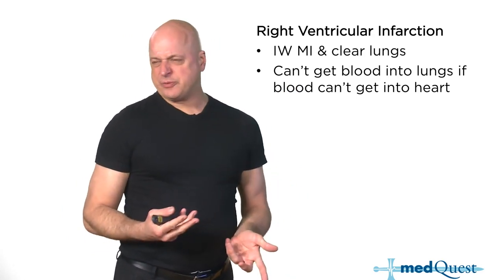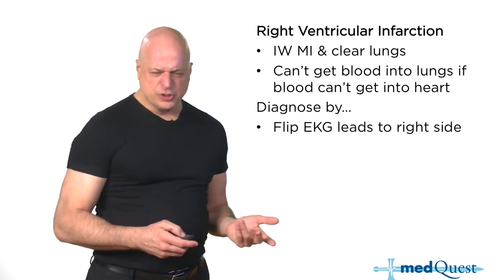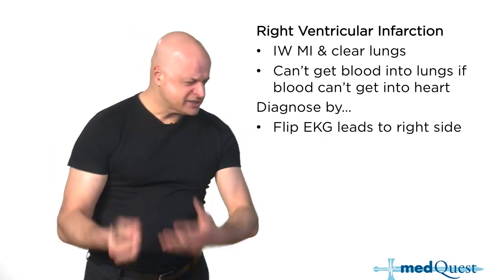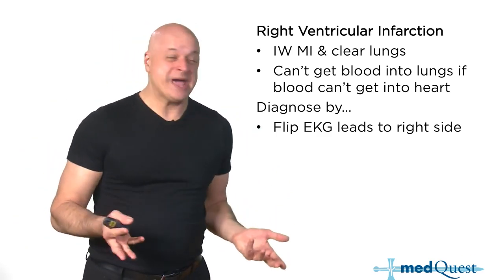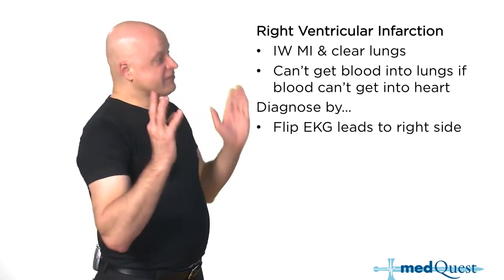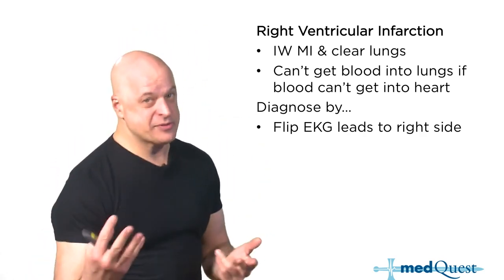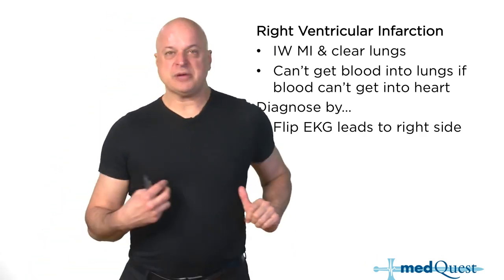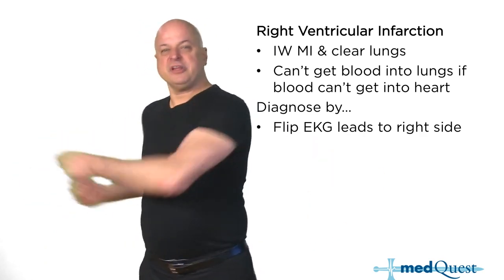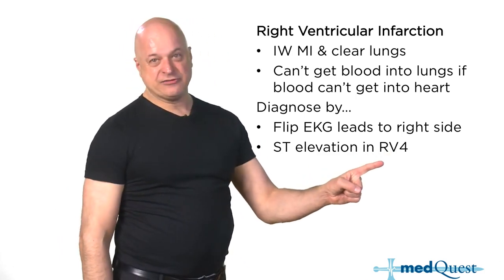Why don't we talk about RV infarction so much? Because there's no real therapy besides giving fluids, and you're going to do angioplasty or thrombolytics anyway — it doesn't change management much. The diagnostic question is most important: 40% of inferior MIs have a right ventricular infarction because of the same arterial supply.